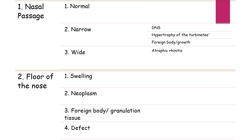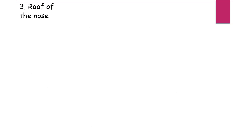Floor of the nose: the main pathology that can be observed is swelling — possible causes are dental cysts. Possible neoplasms in the floor of the nose include hemangioma. Possible defects that can be seen through the floor of the nose are cleft palate and fistula. Point 3 is the roof of the nose; Point 4 is the septum or medial wall of the nose.